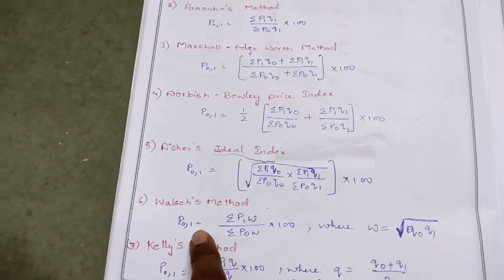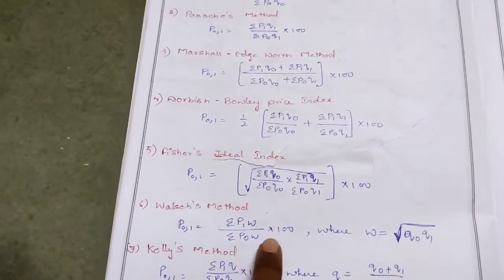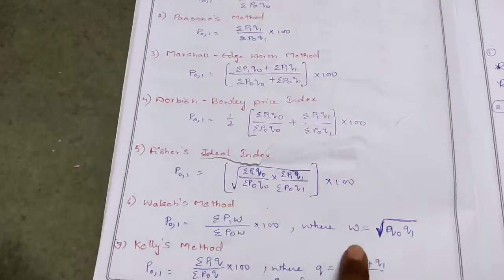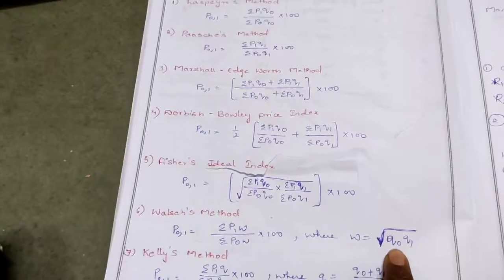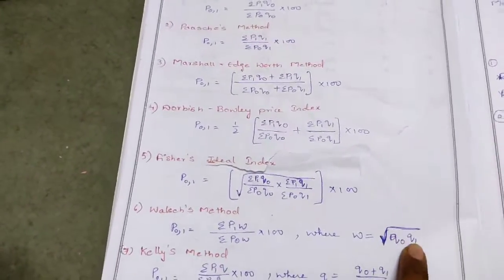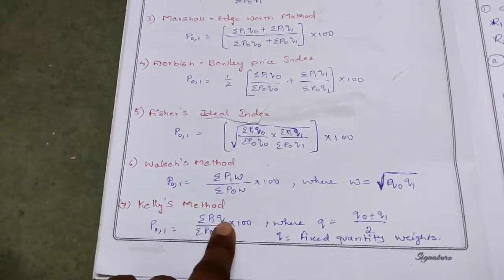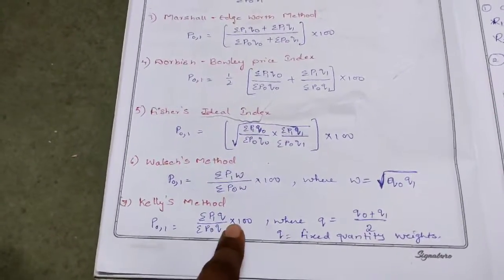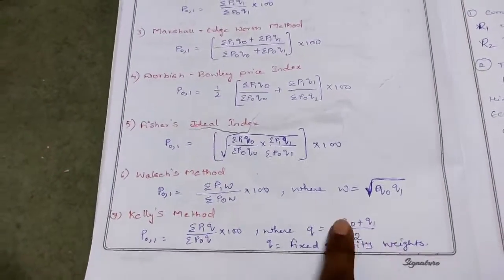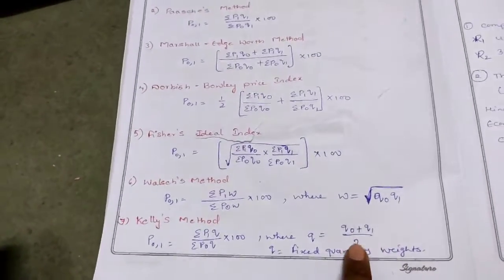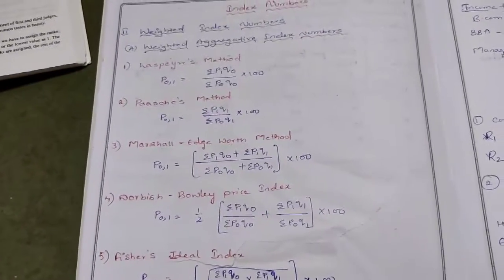Walsh method: P01 = (ΣP1W / ΣP0W) × 100, where W = √(Q0Q1). Kelly's method: P01 = (ΣP1Q / ΣP0Q) × 100, where Q = (Q0 + Q1) / 2 — meaning we add Q0 and Q1 and divide by 2. These are the 7 methods under weighted index numbers.